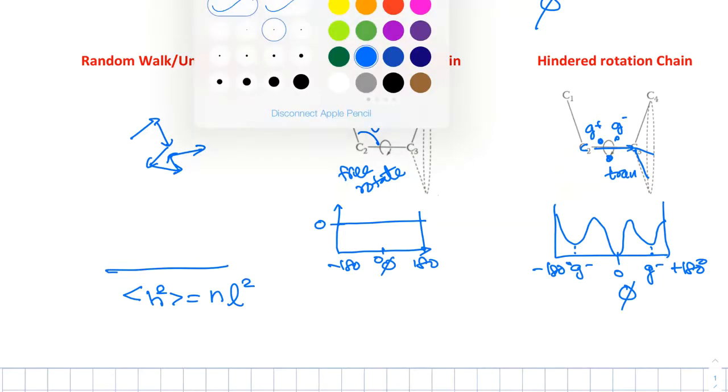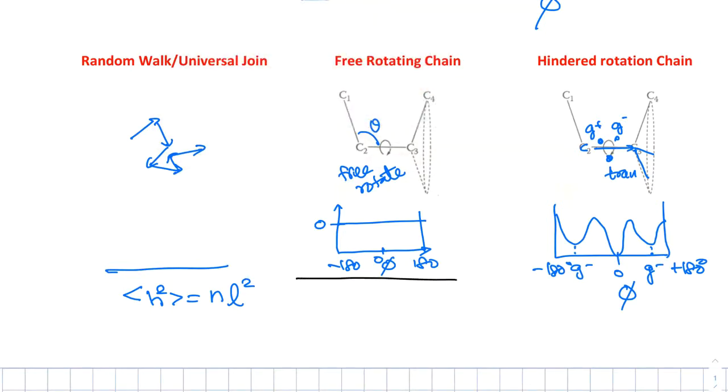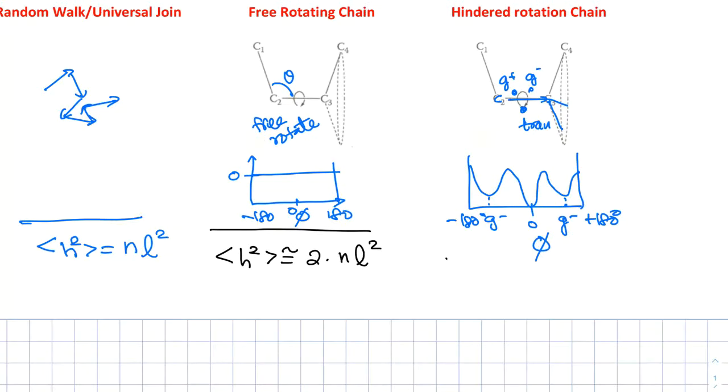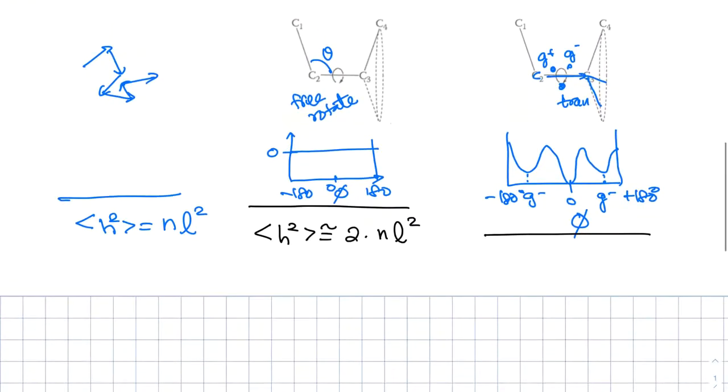From the hindered rotation, which is there are no preferences, H square is about two times N L square. Okay. The exact formula I will show you a little bit later. For the hindered, the free rotation is two. For the hindered rotation, as you can see that, if, because they prefer the trans, which is a longer extended form over the others, you can see that it's actually, this value is bigger than two. And it's approximately proportional to three times N L square.